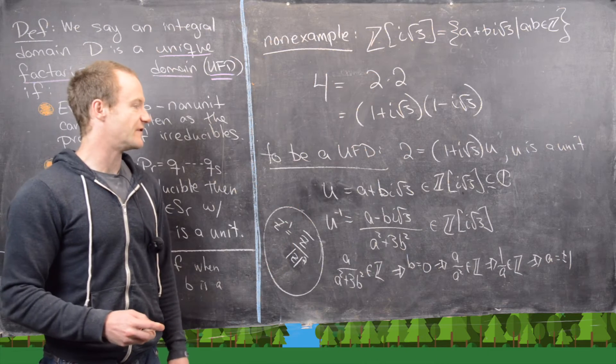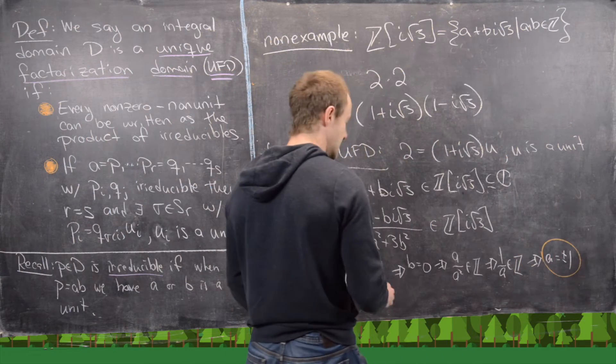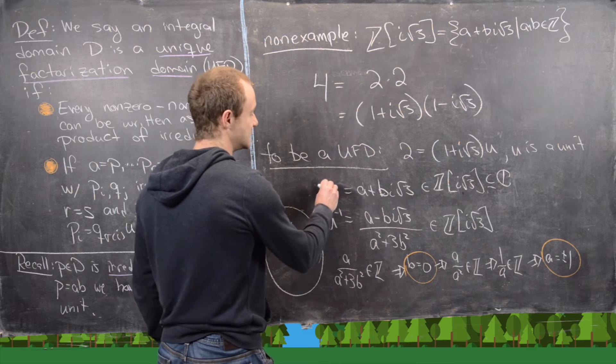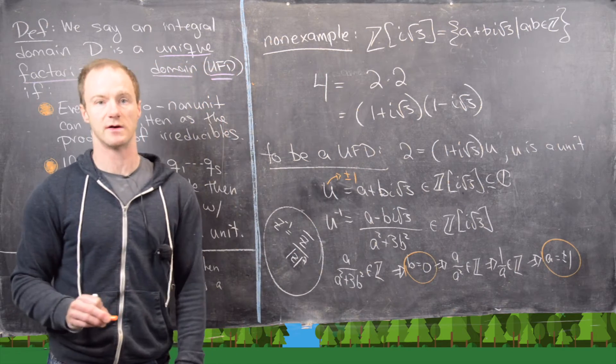But that means that A equals plus or minus 1. But now if A equals plus or minus 1 and B equals 0, but that means U itself started off as being just plus or minus 1.